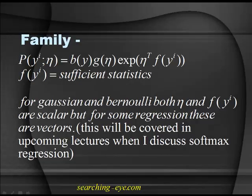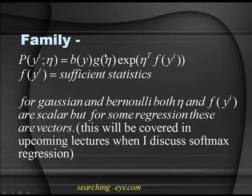G(eta) is a normalizing coefficient — some function of eta that ensures the distribution is normalized. If you take the integral with respect to y (for continuous y) or summation over all y (for discrete y), the result equals 1. So if you are given eta, f(y), and b(y), you can evaluate the integral or summation, set it equal to one, and solve for G(eta).